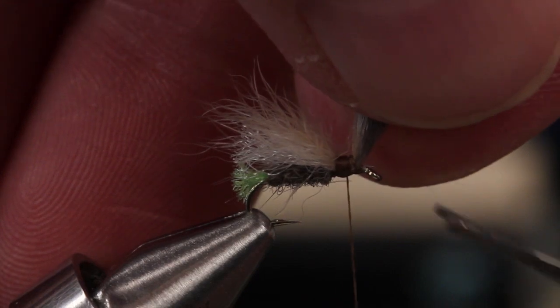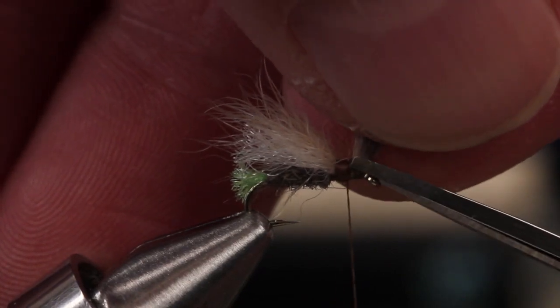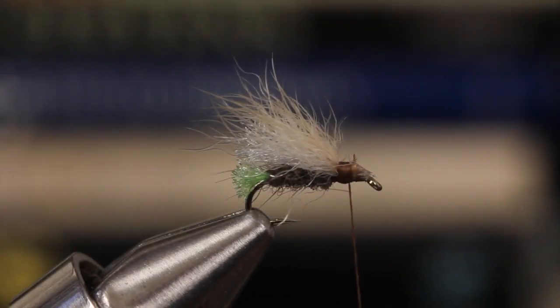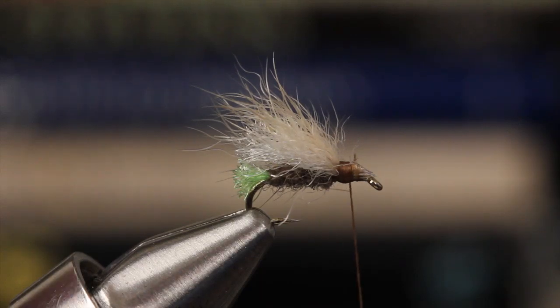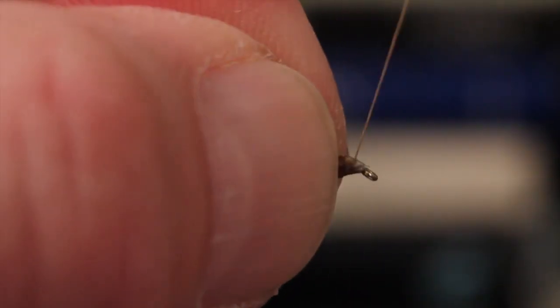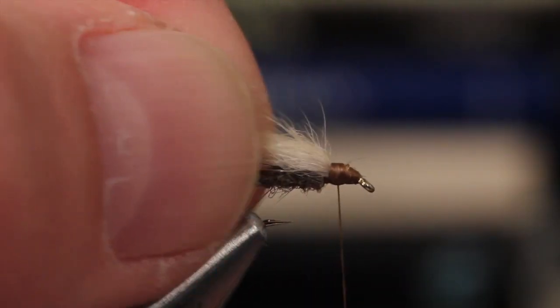Lift the fuzzy butt ends to vertical and while being careful not to cut the thread, snip them off at a shallow angle. You can then take wraps to cover the butts and create a smooth foundation for the remainder of the fly.